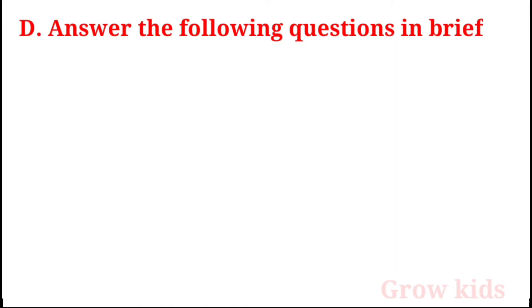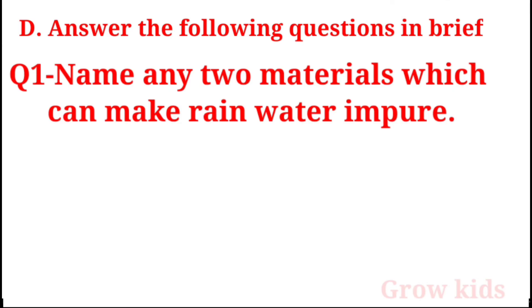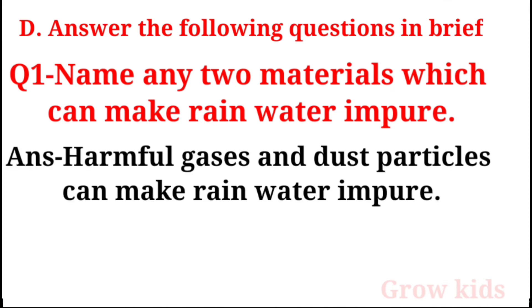Section D: Answer the following questions in brief. Question 1: Name any materials which can make rainwater impure. Answer: Harmful gases and dust particles can make rainwater impure.